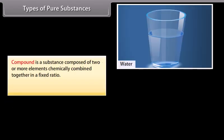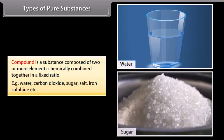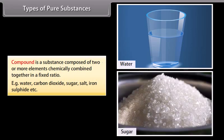Compound is a substance composed of two or more elements chemically combined together in a fixed ratio. Examples include water, carbon dioxide, sugar, salt, iron sulfide, etc.